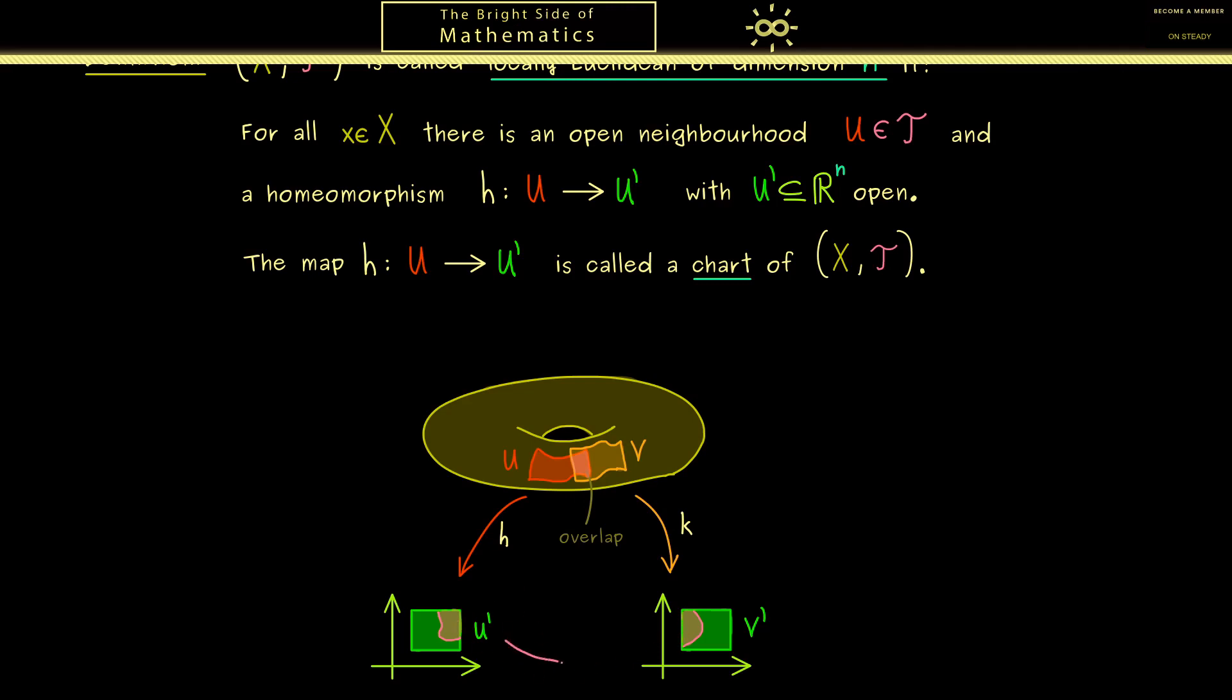So we get a new map we call a transition map. And maybe for the moment let's call it omega. Hence omega is a well-defined map from this open set to this open set. However, important to note here is both sets are subsets of R^n. Hence the abstract space X is not involved anymore.